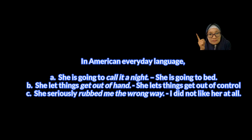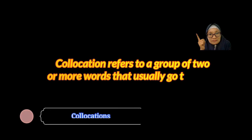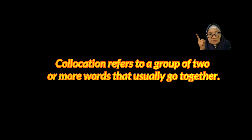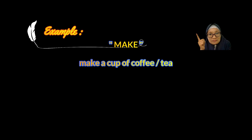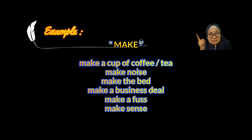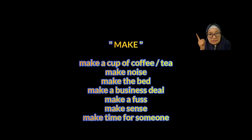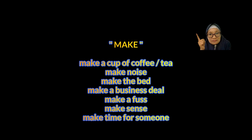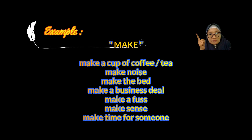The third type is collocations. Collocations refer to two or more words that usually go together. Here are examples of collocations using 'make': make a tea, make a cup of coffee, make a noise, make the bed, make a business deal, make a fuss, make sense, and make time for someone.